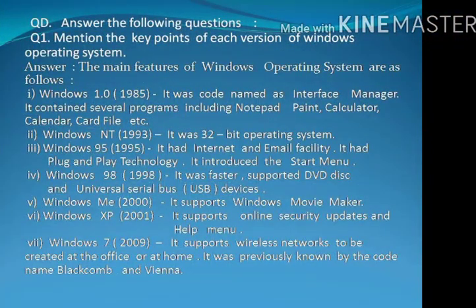Answer the following questions. Question number 1: Mention the key points of each version of Windows operating system. Answer: The main features of Windows operating system are as follows. Number 1 — Windows 1: It was introduced in 1985. It was codenamed as Interface Manager. It contained several programs including Notepad, Paint, Calculator, Calendar, Card File, etc.